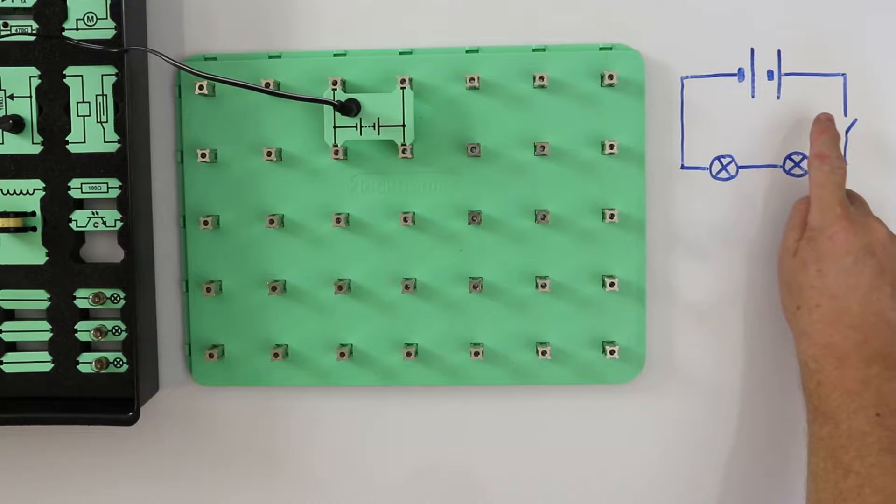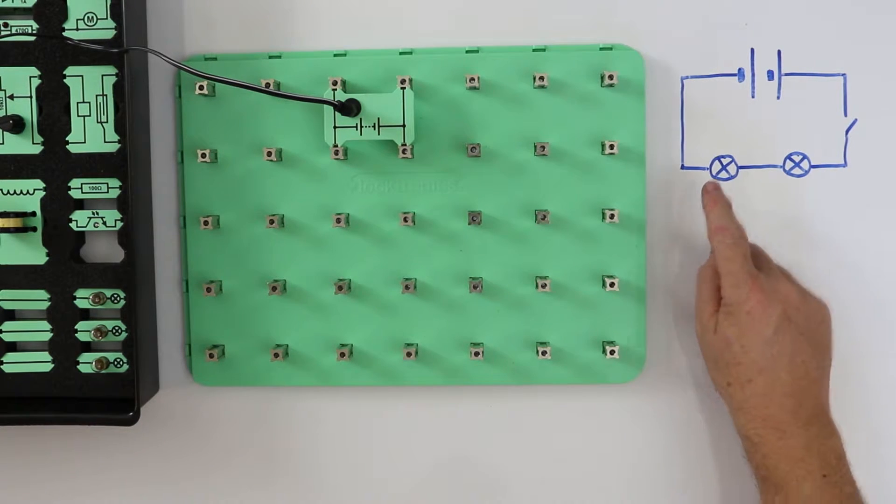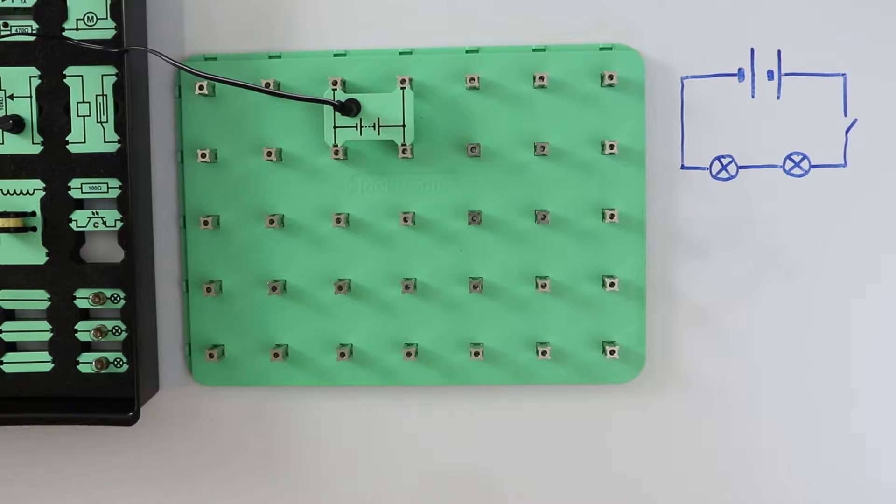A series circuit offers only one route around the circuit, from one end of the battery back to the other. There are no junctions in a series circuit.